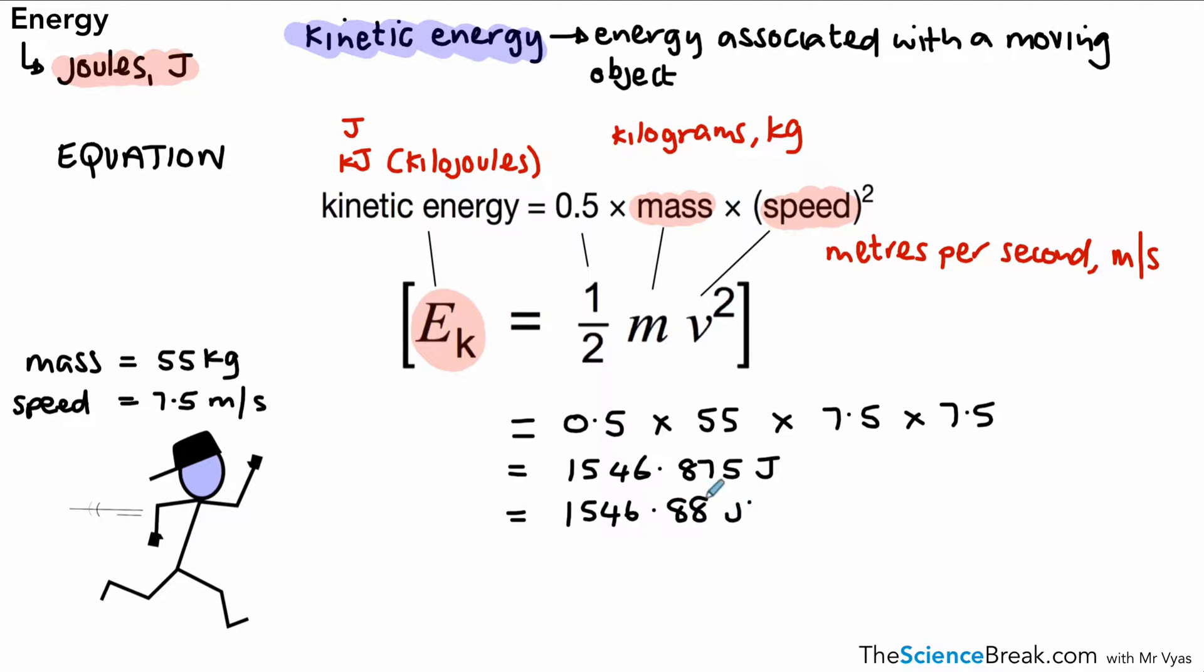And when you put those numbers in, we get an answer of 1546.875 joules. We could round that up to two decimal places, and that will give us 1546.88 joules. And there is our answer for that running person.